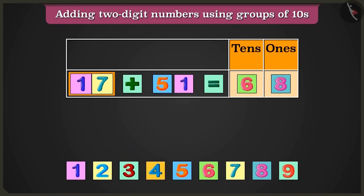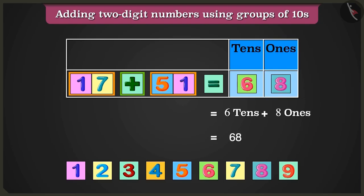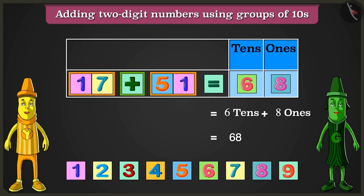This way, 17 and 51 added up to 6 tens and 8 ones that are a total of 68. Now, you got it right, Greeny. Well done.